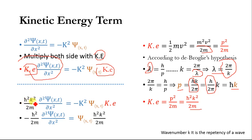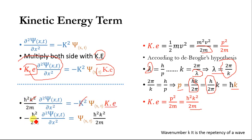Putting the value of kinetic energy into the left-hand side of the equation, we get (h-bar² k²/2m) times (∂²psi(x,t)/∂x²) equals minus k² psi(x,t) times kinetic energy. The k² cancels. Multiplying both sides by minus 1, we get minus h-bar²/2m times ∂²psi(x,t)/∂x² equals kinetic energy times psi(x,t).